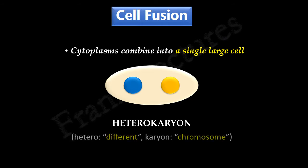Hetero means different and karyon means chromosomes. It is so-called because this cell has two different sets of chromosomes.